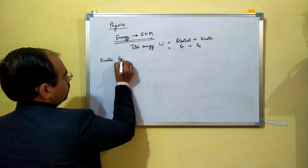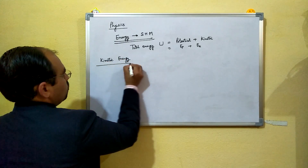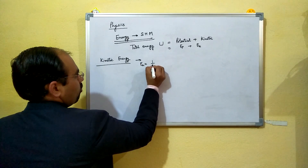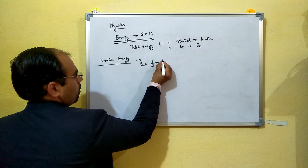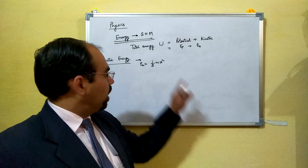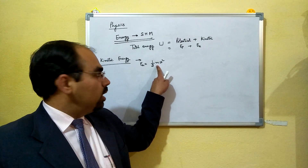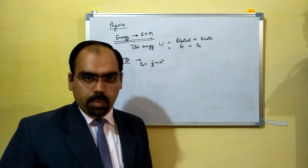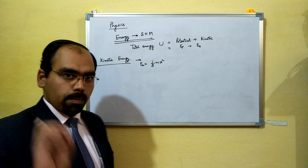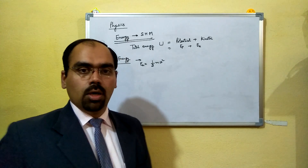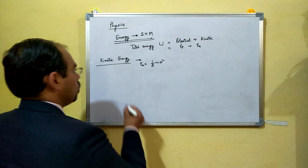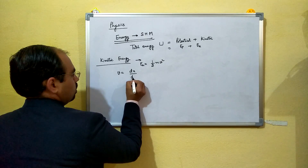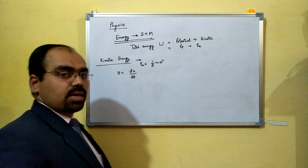Kinetic energy, as we know, is equal to half of mv squared, where m is the mass of the body and v is the velocity of that body during simple harmonic motion. To get the value of v, we are going to use the differential expression dx by dt, where x is the displacement of that body from its mean position.